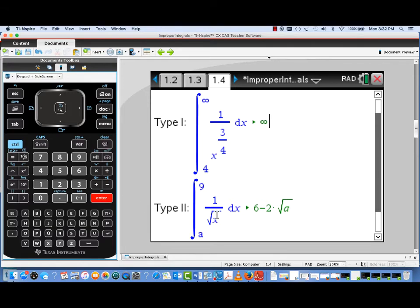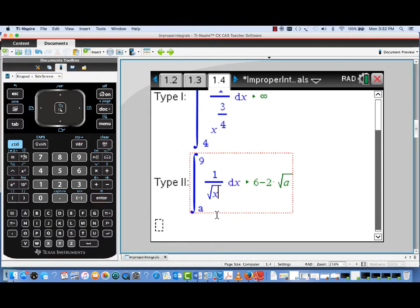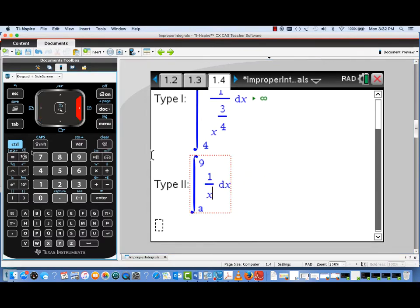Let's look at the Type 2 improper integral. Now we have 1 over the square root of x, or 1 over x to the 1 half. I'm going to edit the power on x in the denominator from 1 half to a power that's greater than 1. I'm going to change it to x squared.